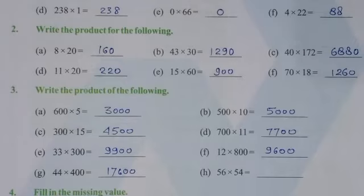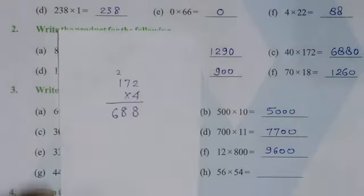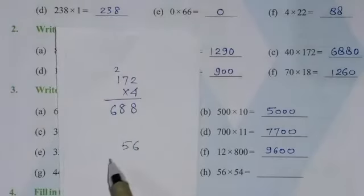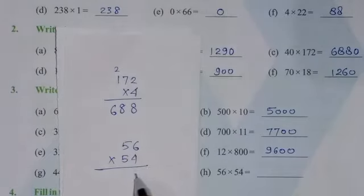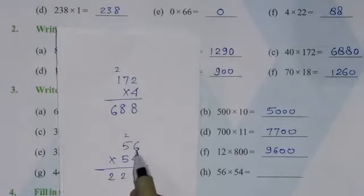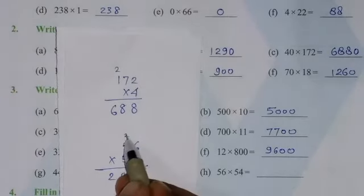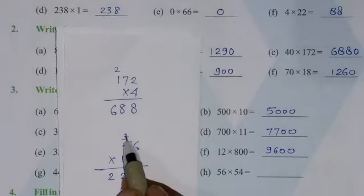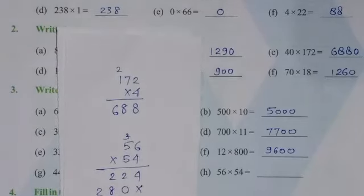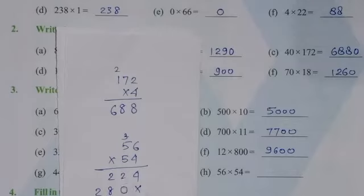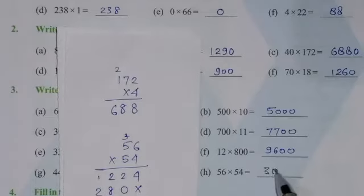Here, 56 into 54 - this time you have to multiply the numbers. So multiply 56 into 54. 4 times 6 is 24, so 4 carry over 2. Now 4 times 5 is 20, 20 and 2 is 22. Put a cross here. 5 times 6 is 30, so 0 carry over 3. Now 5 times 5 is 25, 25 and 3 is 28. Now add these 2 numbers: 4, 2 and 0 is 2, 2 and 8 is 10, so 0 carry over 1. 1 and 2 is 3. So this will be the answer: 3024.